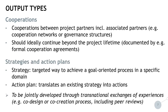For the next output type, we have strategies and action plans. A strategy is a targeted way to achieve a goal-oriented process in a specific domain. An action plan translates an existing strategy into actions. What is important here is that strategies and action plans need to be jointly developed through transnational exchanges of experiences. This can be done, for example, in a co-design and co-creation process, which can include, among others, peer review processes.